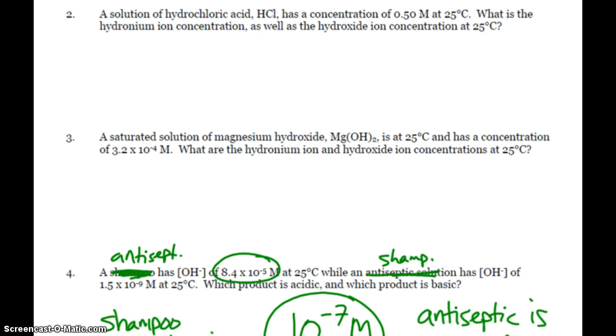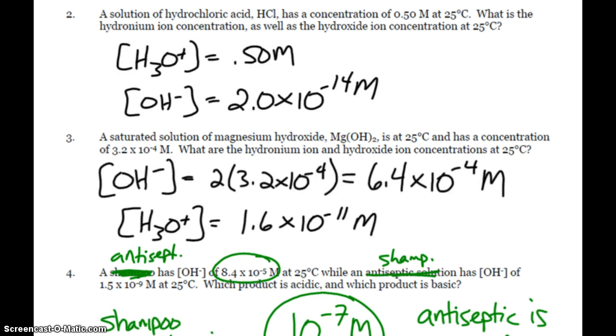So pause and figure out 2 and 3 and check your answers. So question 2. Hydrochloric acid. Concentration's 0.5. So that's what the concentration of hydronium is. Ion product constant divided by that. That's how I get my hydroxide. 2 times 10 to the negative 14th molar.